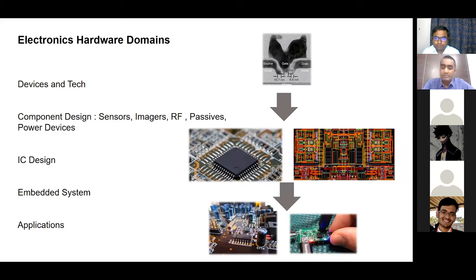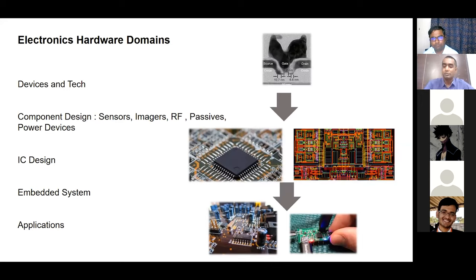Each mobile phone now has tiny ICs with nanoscale transistors enabling so much processing in a small area. Scaling down transistors, making them smaller, researching semiconductor technology, and finding the right materials and structures for these transistors is the first area where a lot of engineering and science is applied. This area is more physics-intensive — it requires understanding quantum mechanics, semiconductor principles, and fundamentals, closely interfacing with pure science, physics, chemistry, and materials science.